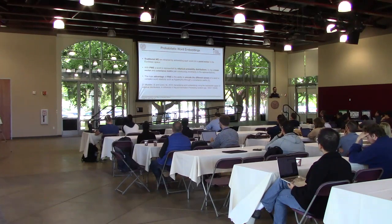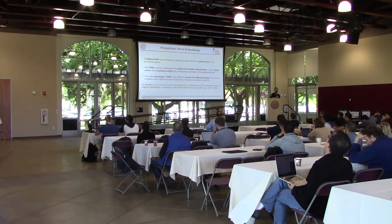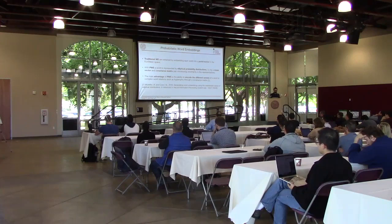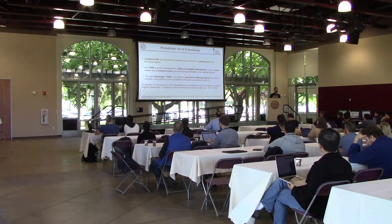Let's get started with some background on probabilistic word embeddings and the Match Pyramid model. Compared to traditional representation of words where a word is represented by a vector or a point in Euclidean space, with probabilistic word embeddings each word is represented by a probability distribution. We focused on elliptical probability distributions since these are easier to manage and to optimize.